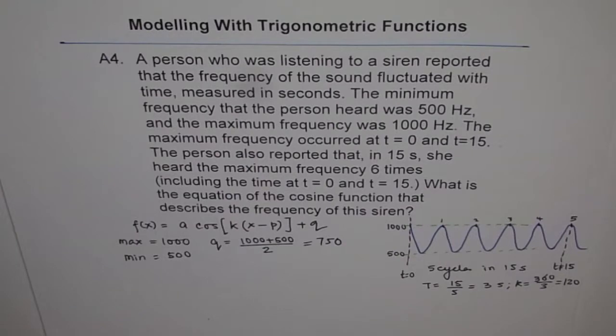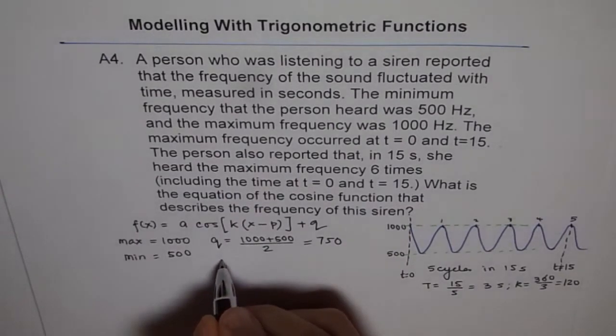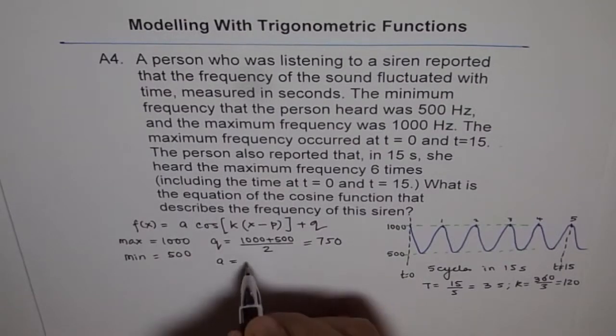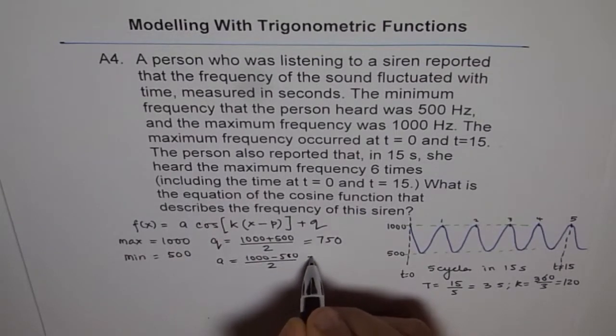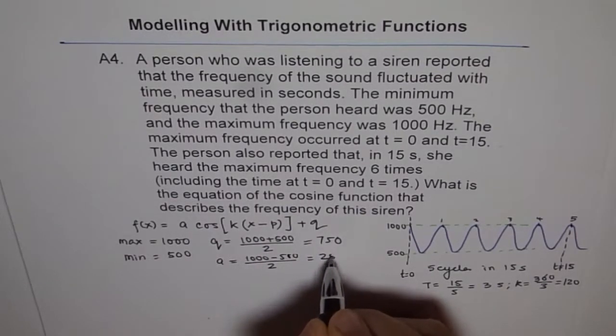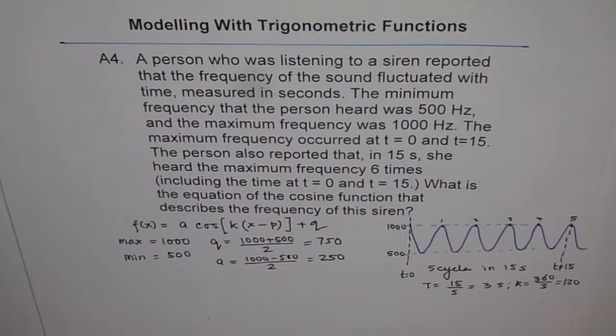Now a is the amplitude, amplitude is difference divided by 2, so let's do that. So we get a equals 1000 minus 500 divided by 2, which is 500 divided by 2, and we get 250. So a is 250 for us.